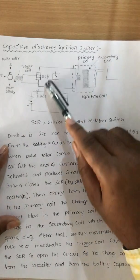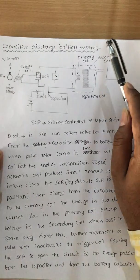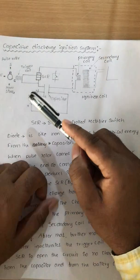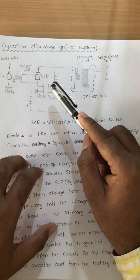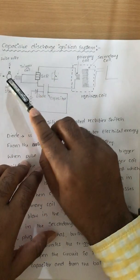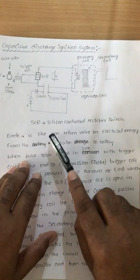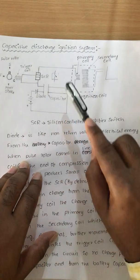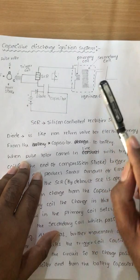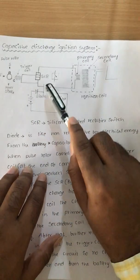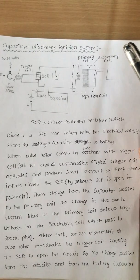This is the basic circuit diagram for the Capacitive Discharge Ignition System. Let us first identify the parts: the pulse rotor, trigger coil, SCR (silicon controlled rectifier), primary coil and secondary coil combined together as the ignition coil, diode, capacitor, and the battery. These are the major components in the Capacitive Discharge Ignition System.